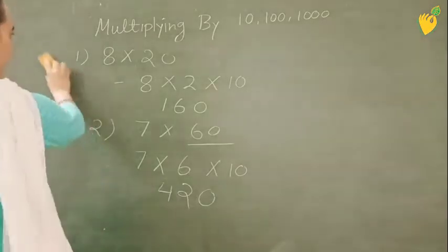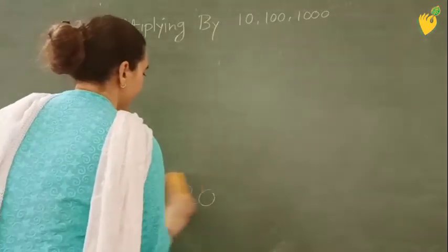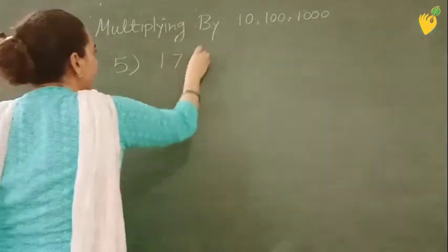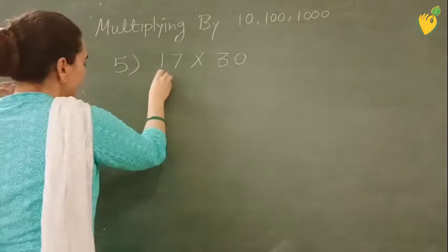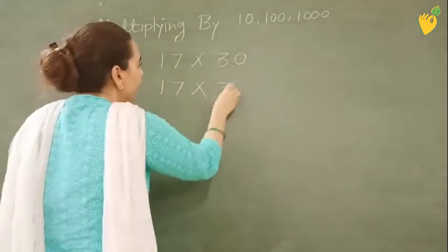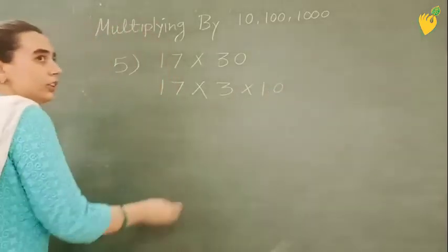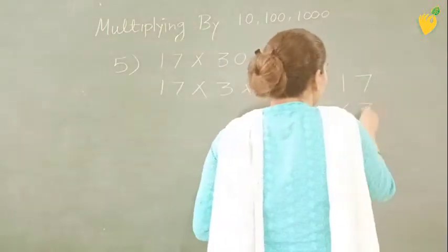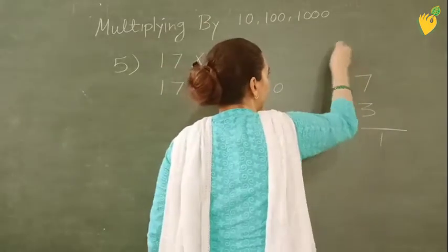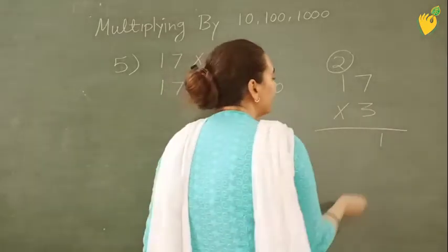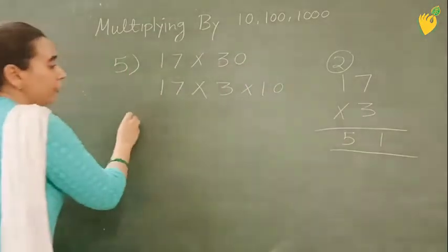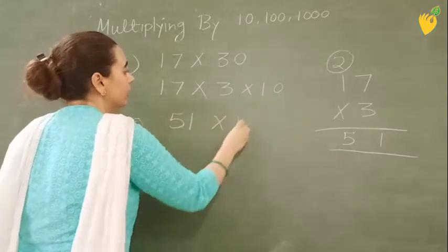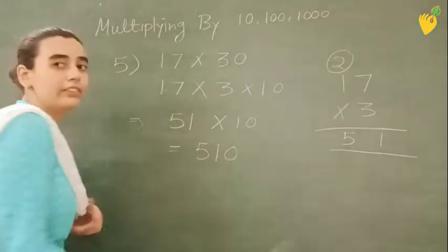Question number 5 is 70 multiplied by 40. Again, this 30 will give you 10. 7 multiplied by 3 multiplied by 10. So it will be, then we will multiply. 3 sevens are 21. 2 will be carry. And 3 ones are 3. 3 plus 2 is 5. If you have learned tables, you can read it directly. Like 7 threes are 21. And this zero, it will be 210 or 210.